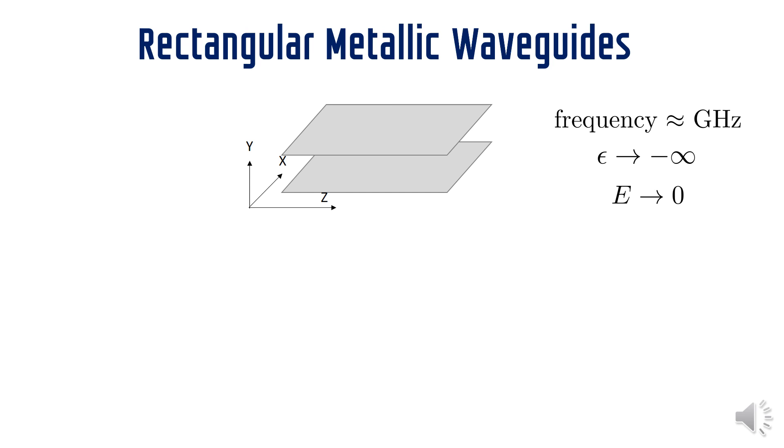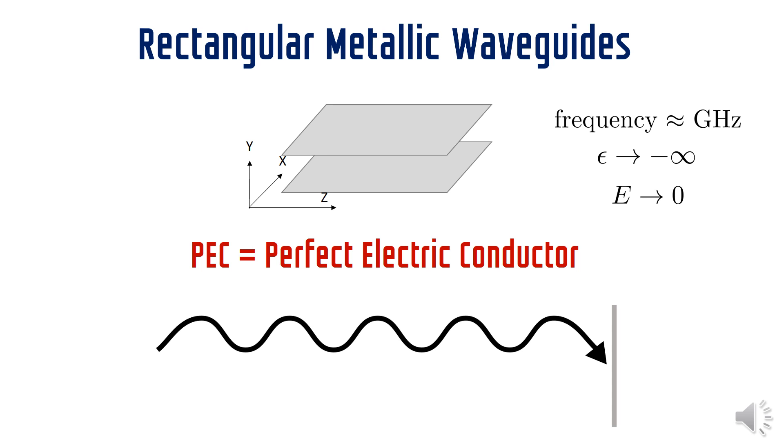This metal is called perfect electric conductor or PEC, which is a kind of misnomer because the metal is not conducting any electric field. Any electromagnetic wave which is incident on the PEC is reflected back. In this case we can see that the wave is free to move in the xz plane but constrained to move along the y-axis.